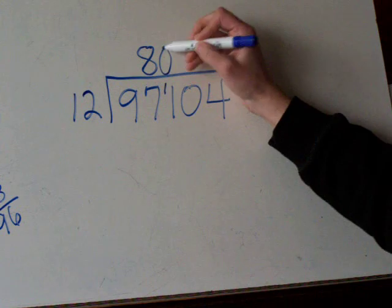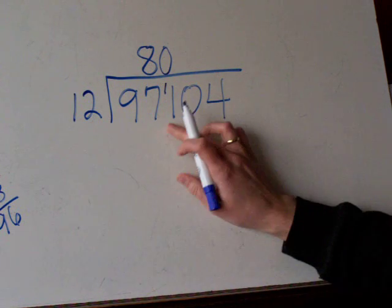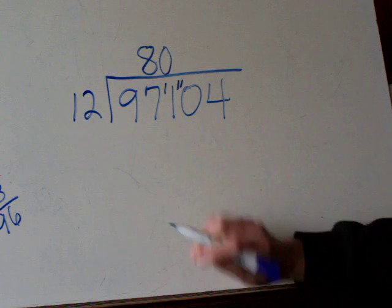So we're going to put that remainder over here. 12 goes into 11. No, it doesn't. So we just could write a 0 here. There's still about 11 left over. So that's our remainder. We're moving it over.